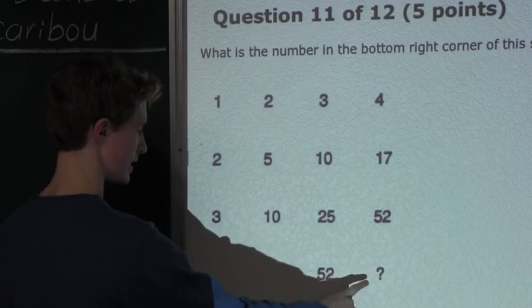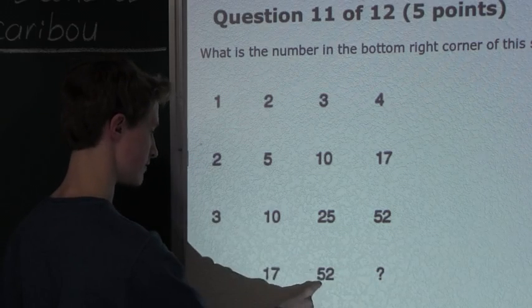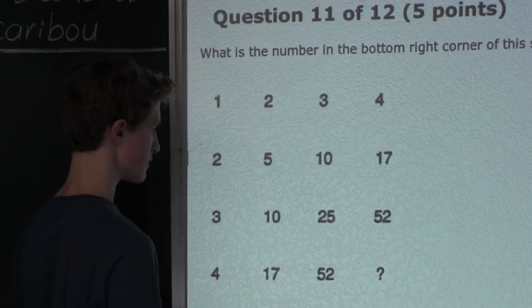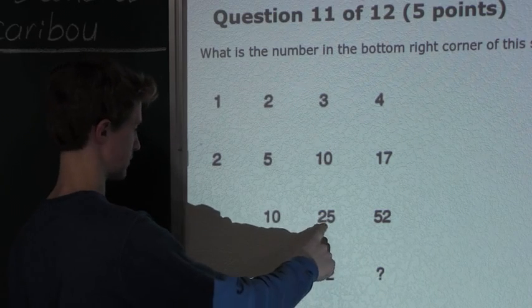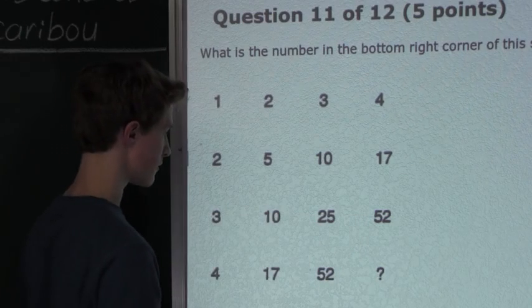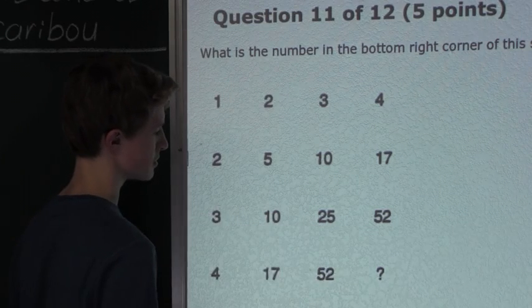So, we know that we must add the left number of whatever this number is, which is 52, and the top number, which is 52 again, and the top left number. So, we have 52 plus 52 is 104, and 104 plus 25 is 129.